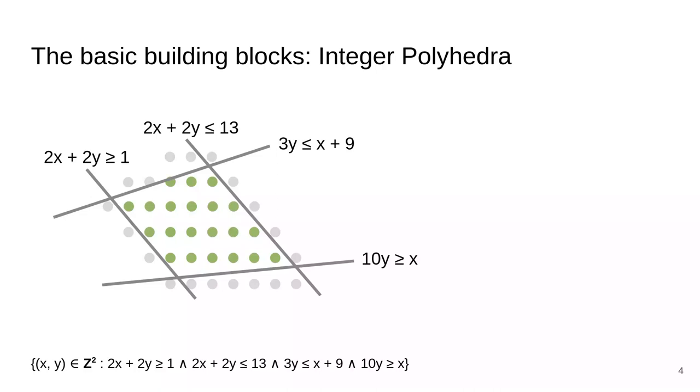Integer polyhedra are sets of tuples of integers subject to linear constraints. In this example, we have a set of pairs of integers x, y subject to the four constraints: 2x + 2y ≥ 1, 2x + 2y ≤ 13, 3y ≤ x + 9, and 10y ≥ x.